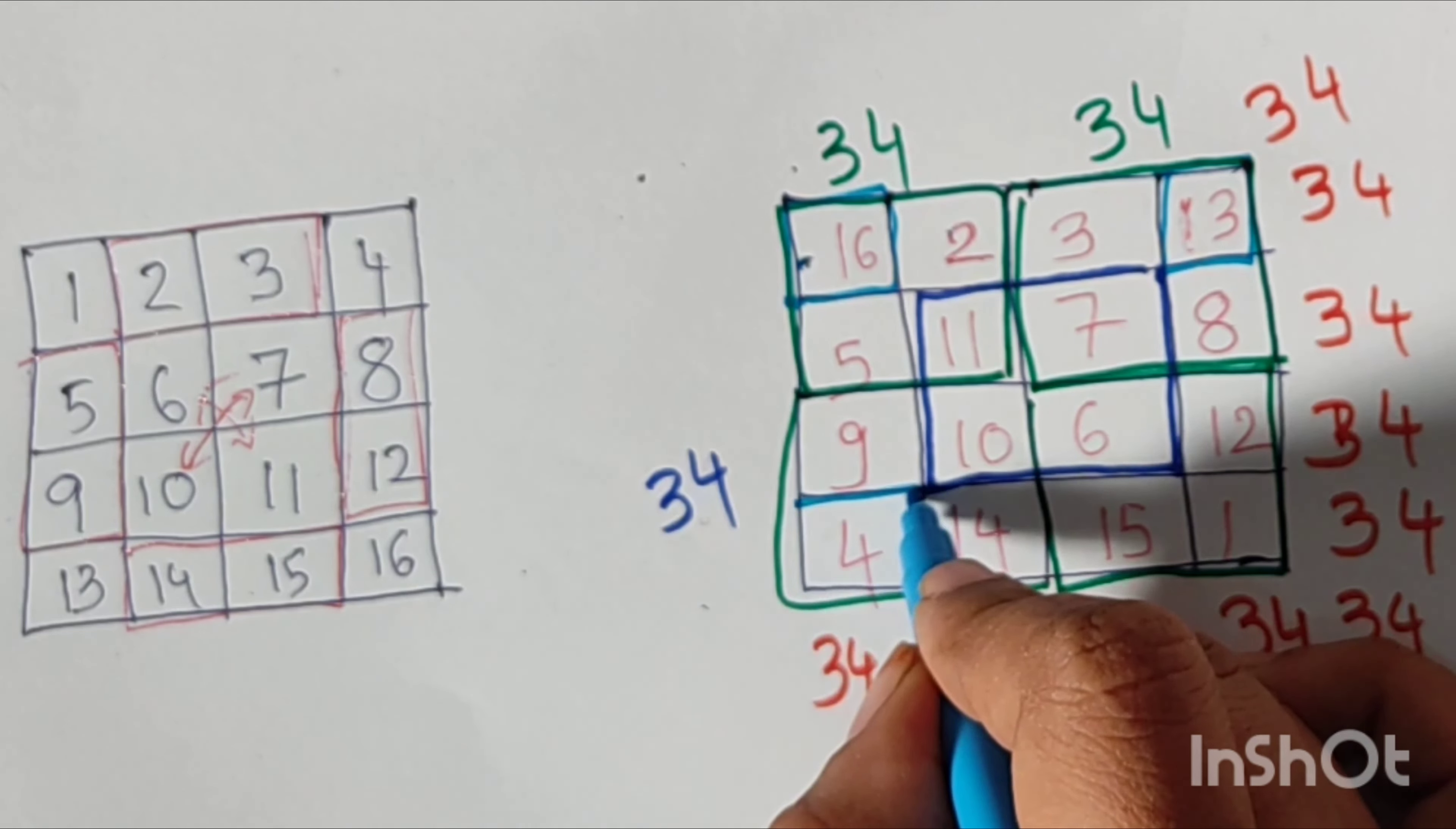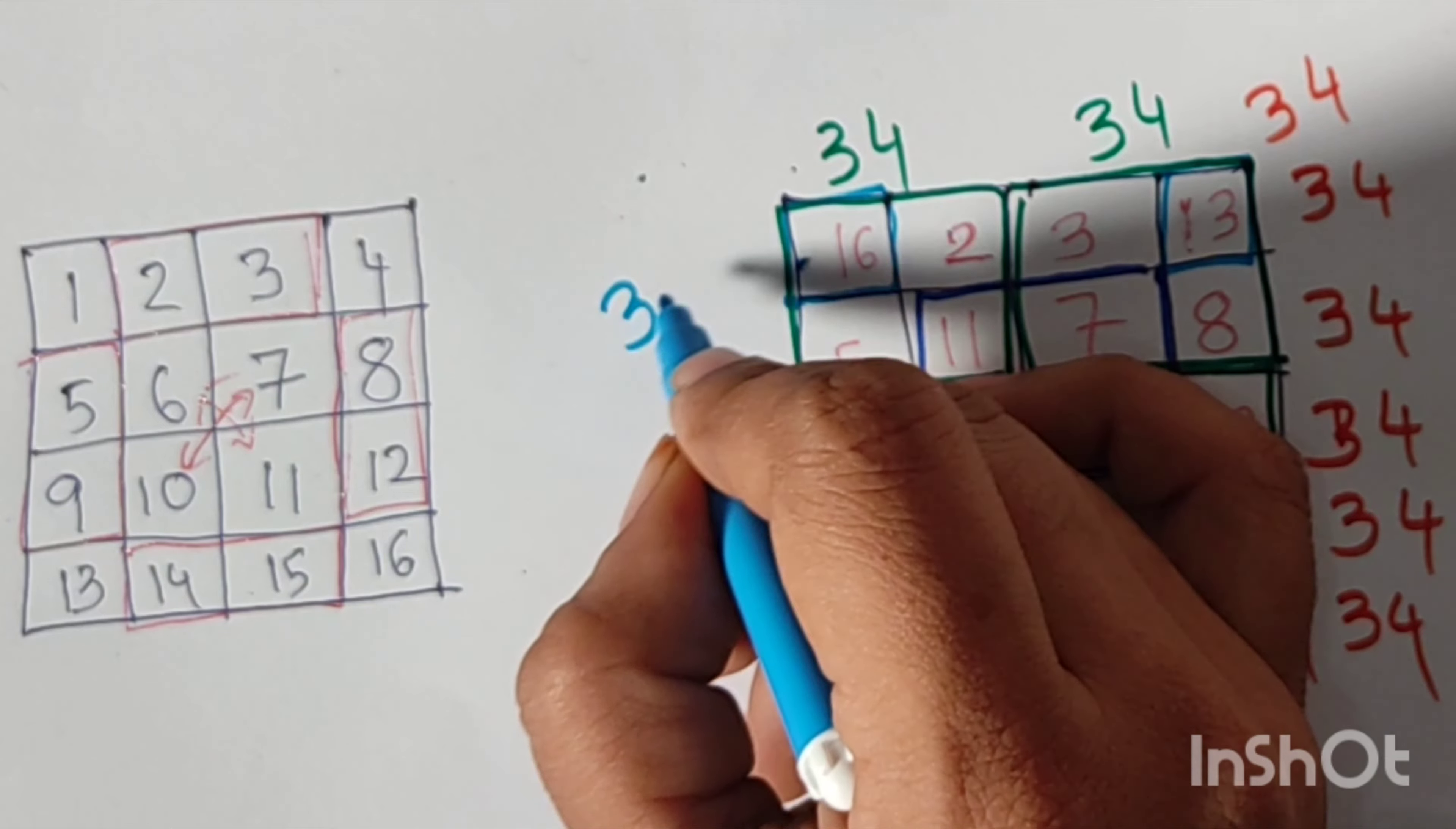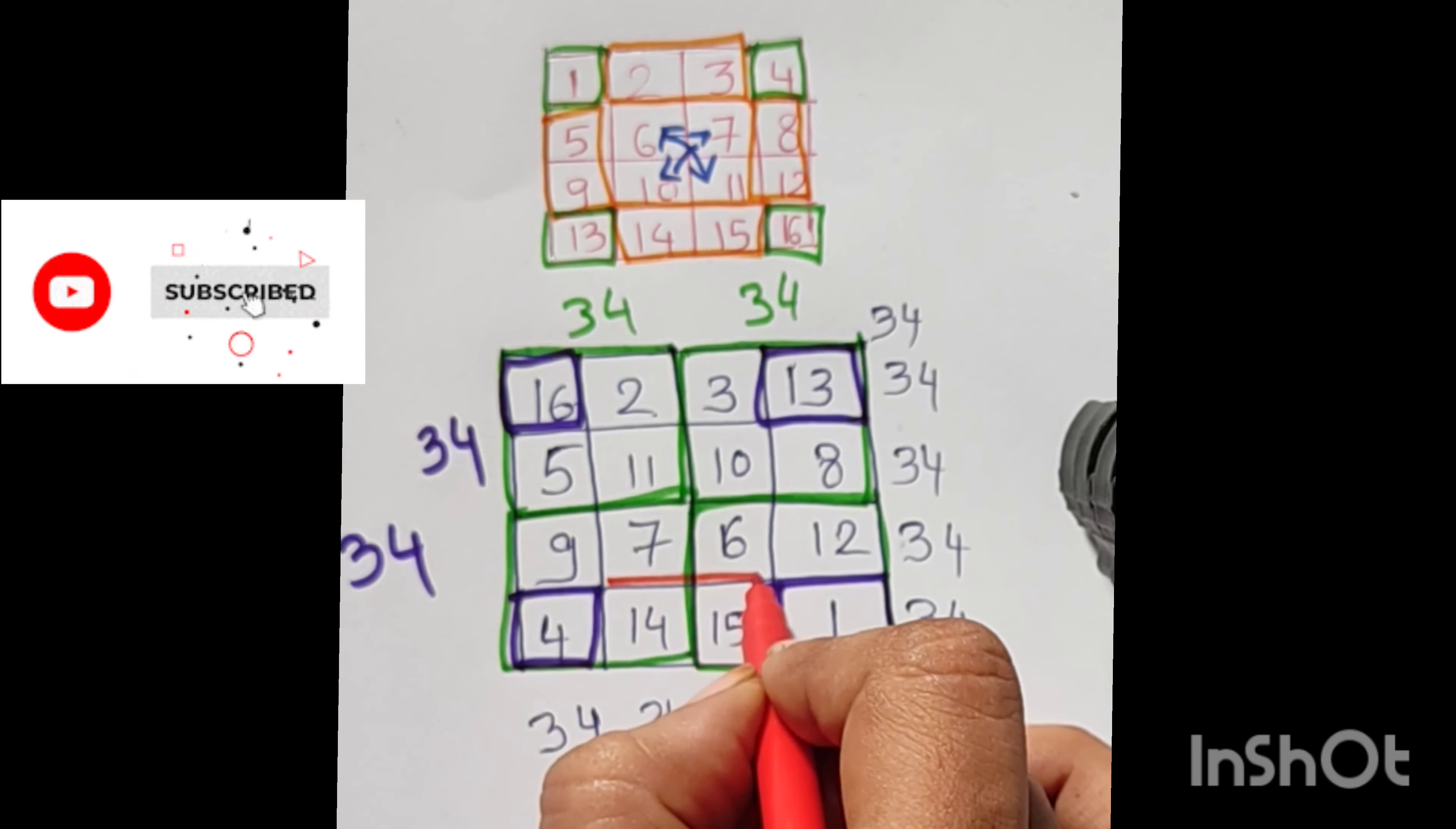Now we'll check the corners of the big square. That is 16, 13, 4, 1. These four corners sum to 34. And we'll check the inner square, the total will also be 34.